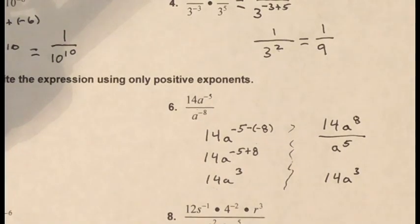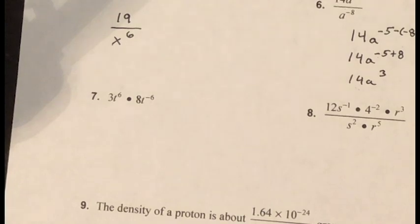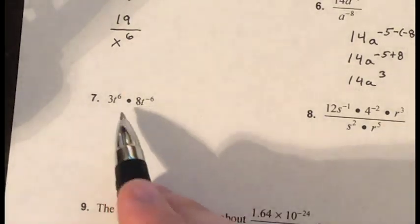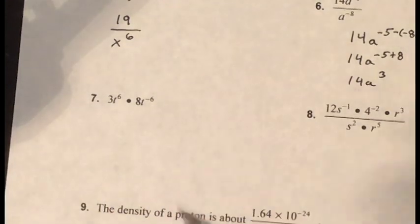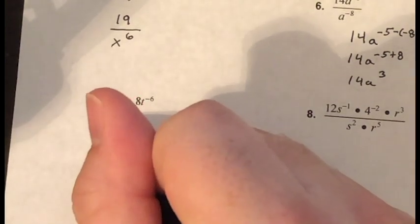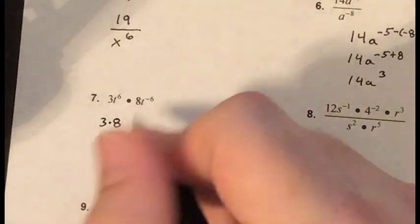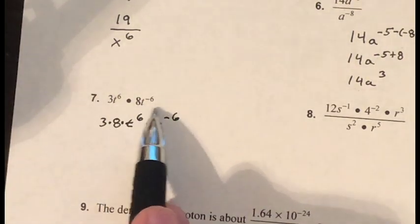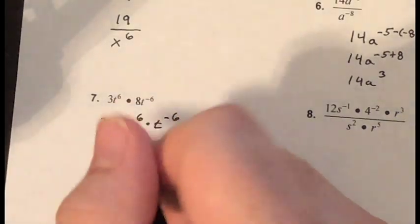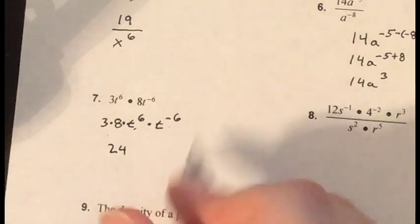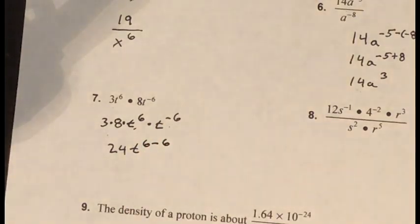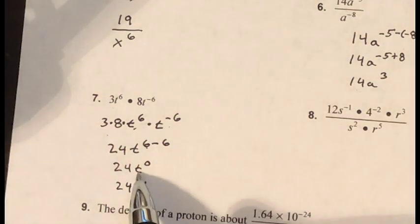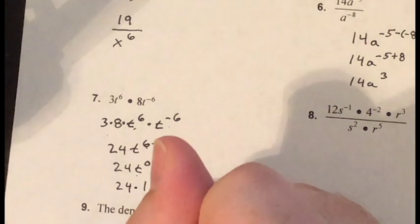Problem seven: three t to the sixth times eight t to the negative six. I multiply the coefficients: three times eight is 24. Then I add the exponents for t: six plus negative six equals zero. So I have 24 times t to the zero power. Anything raised to the zero power is one, so t to the zero is one, giving a final answer of 24.